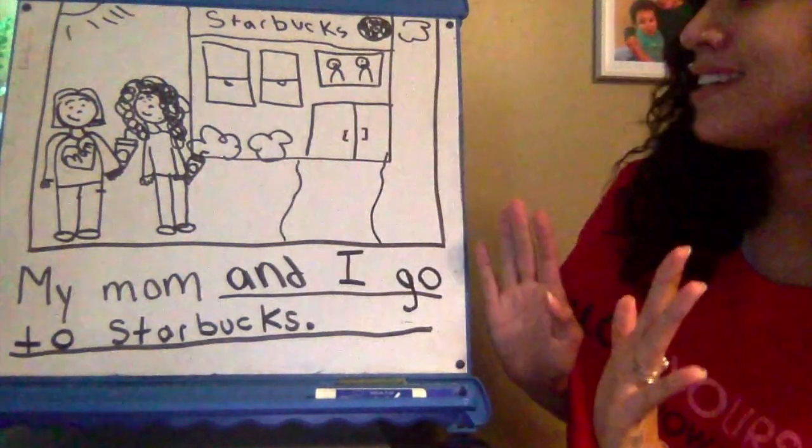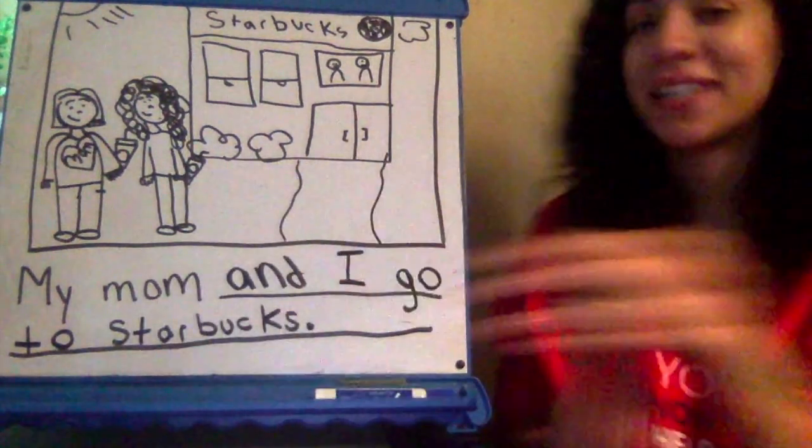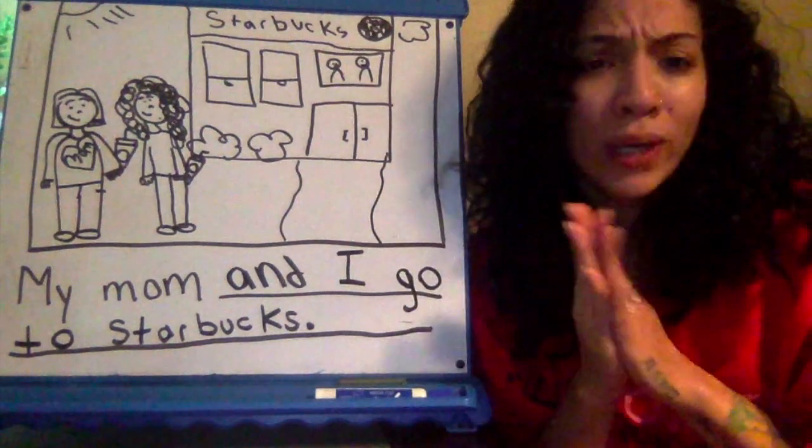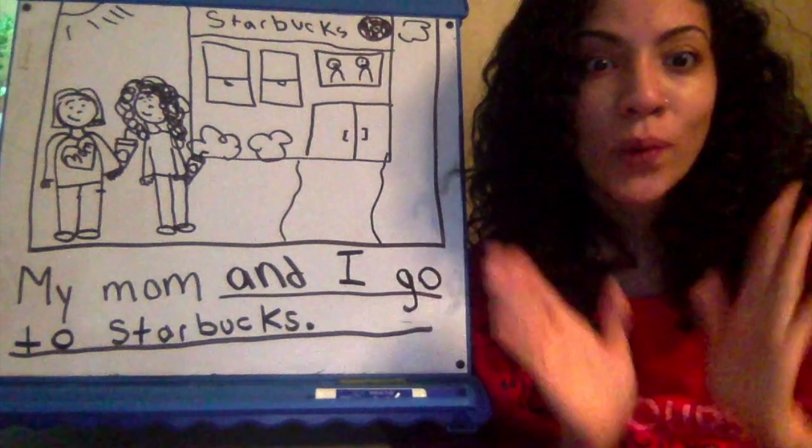Anywho, this sentence says, my mom and I go to Starbucks. I love my picture so much. I love going with my mom to Starbucks. It's something so fun. And we both love Starbucks.